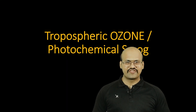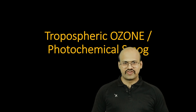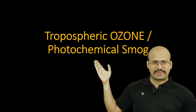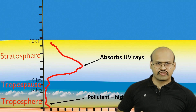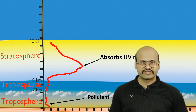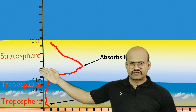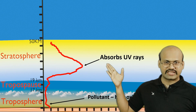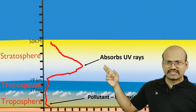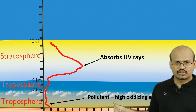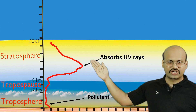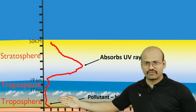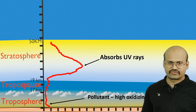Welcome to another video of Zeta Axis. Today we will discuss tropospheric ozone, which also causes photochemical smog. We have seen in previous videos that ozone is mainly concentrated in the stratosphere, where it acts as a blanket against UV rays. In the troposphere, however, it acts as a pollutant. In this video we will discuss the role of ozone in causing pollution in the troposphere.